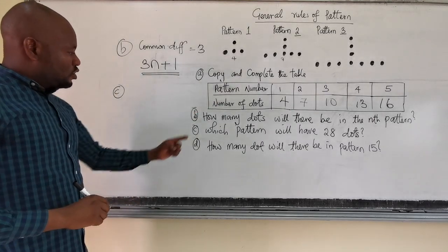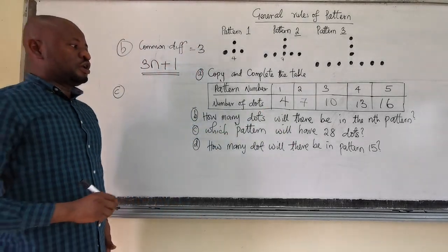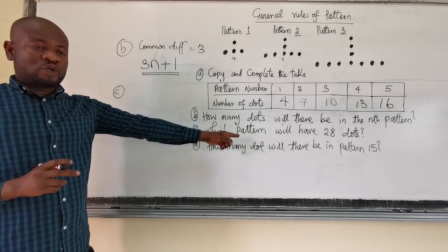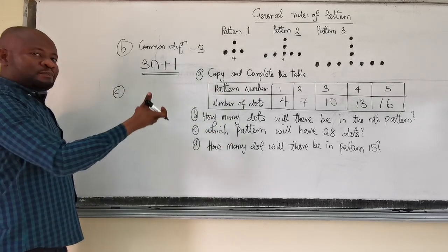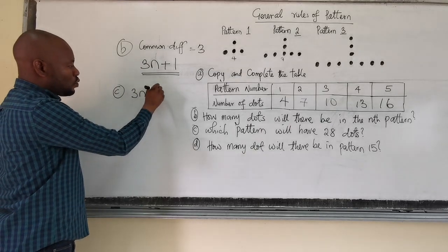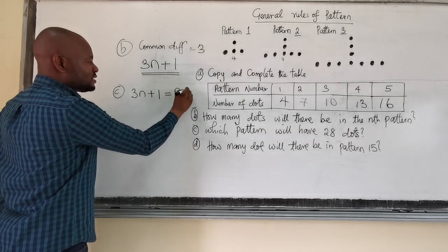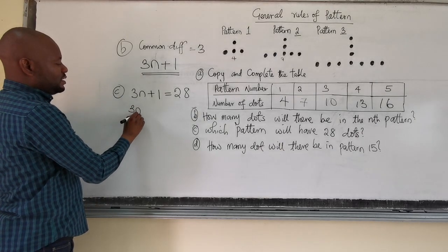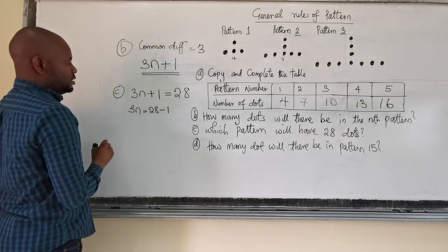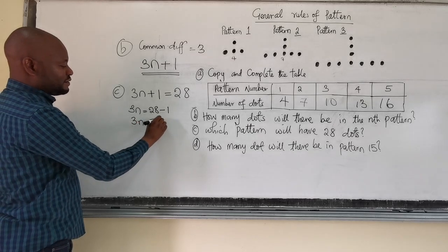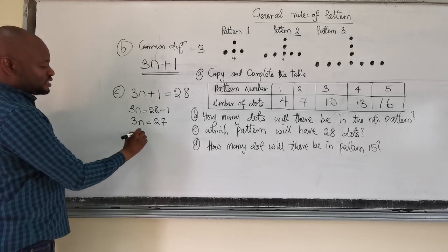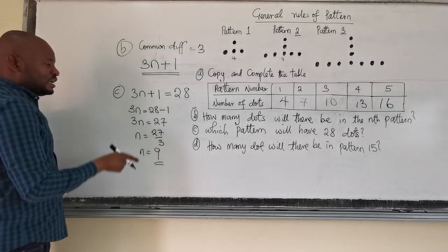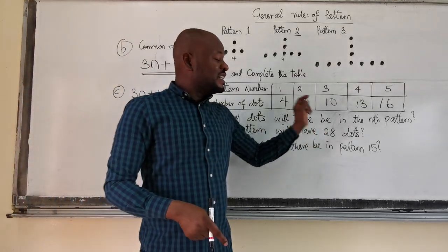Now number C part of it says, which pattern will have 28 dots? For us to find the pattern number that will have 28 dots, I will say the Nth pattern is 3N plus 1. So this 3N plus 1 equals 28 dots. That means 3N is equal to 28 minus 1. And we have it to be 3N equals 27. So if I divide this side by 3, we have N gives us 27 over 3. And that gives us the 9th pattern. So the 9th pattern will have 28 dots.